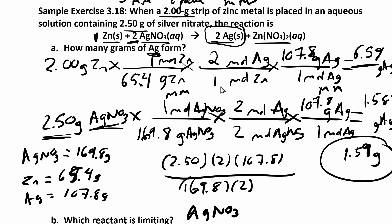Now we can continue on in this problem. In Part A we were looking at starting with zinc and silver nitrate — how much silver would we make? Now that we know that the limiting reactant is silver nitrate, we can use the amount of silver nitrate. We know that we're going to use that up completely.